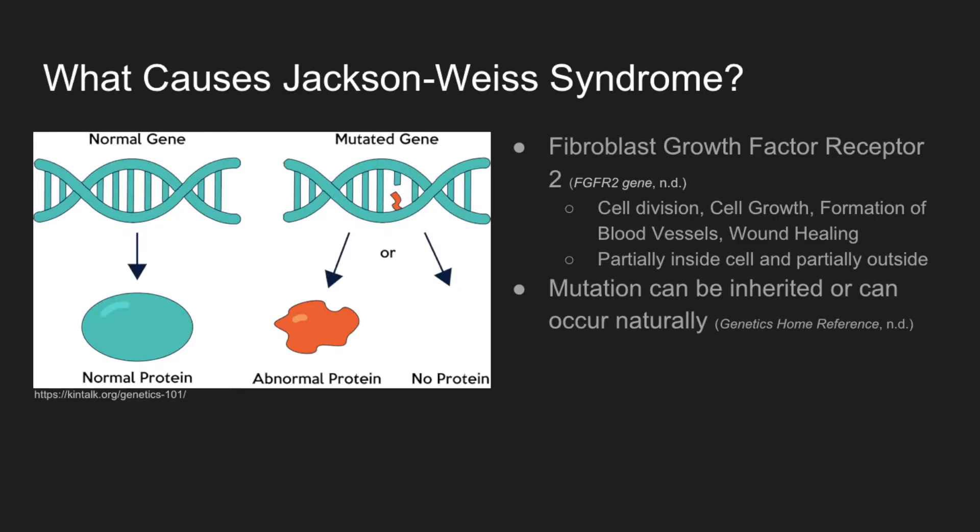What causes Jackson-Weiss Syndrome? This disorder is caused by a mutation in the gene fibroblast growth factor receptor 2. FGFR2 is in charge of cell division, cell growth, formation of blood vessels, and wound healing, among other processes.